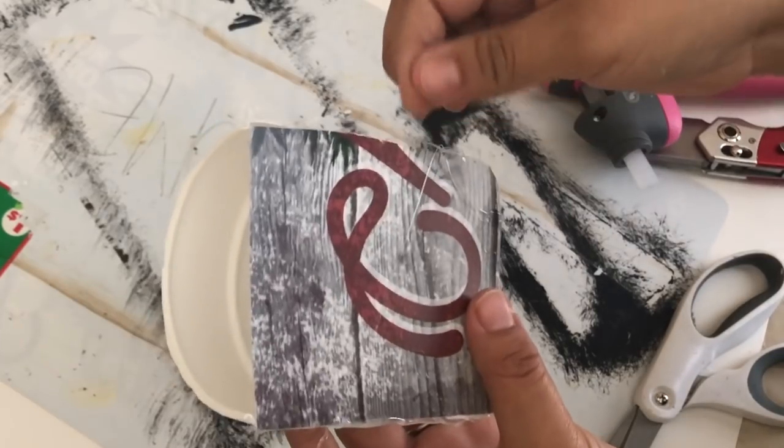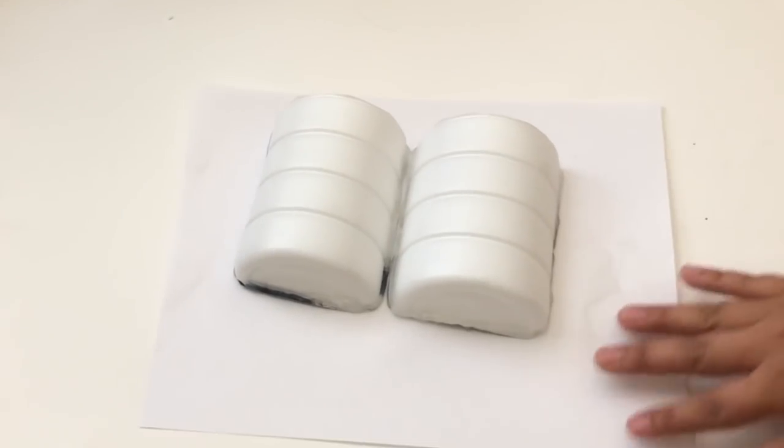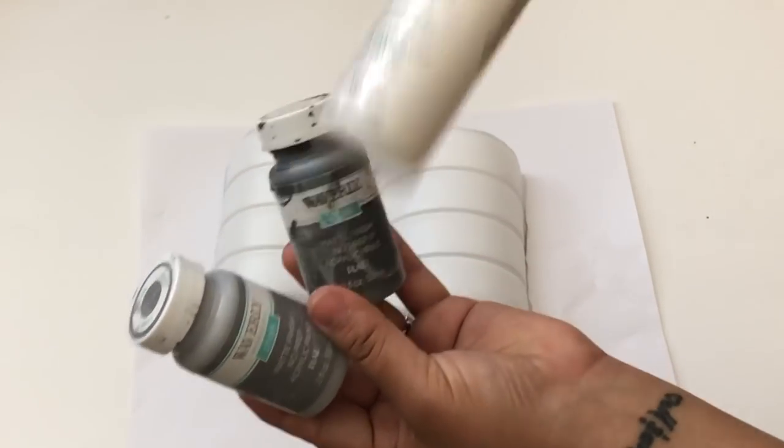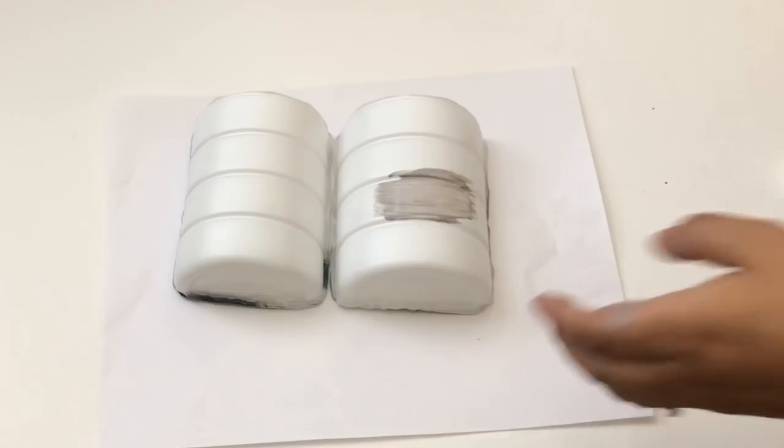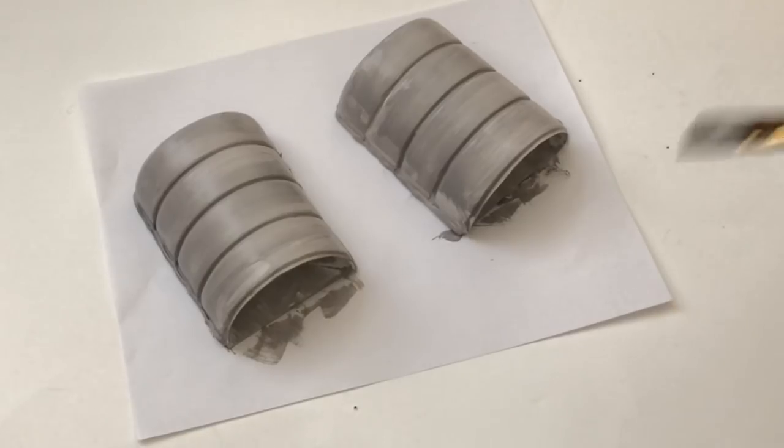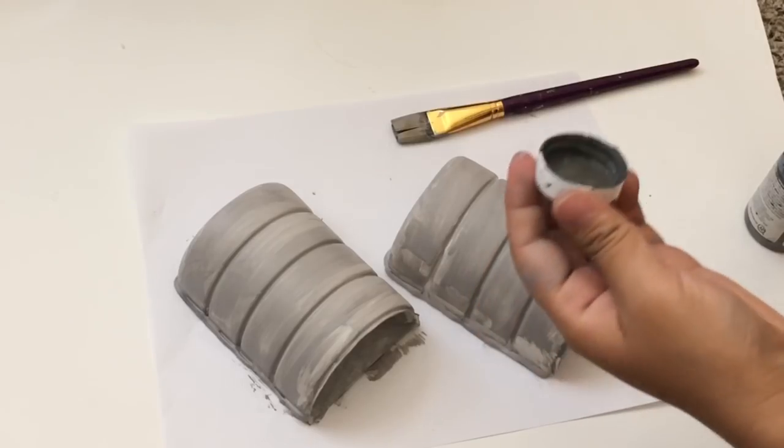Here, I don't know if y'all can notice, but I accidentally burnt myself, so be careful. Now I'm going to paint my containers using three different colors. I am first going to give them one coat of the Waverly chalk paint in steel. I did not paint the back and I also painted a little bit of the inside.